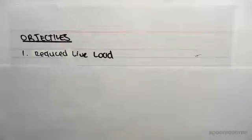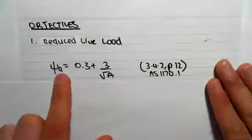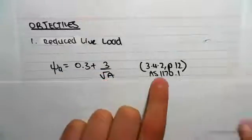Hey guys, the objective of this video is to find the reduced live load with the live load reduction factor. The live load reduction factor is given by this formula: ψₐ = 0.3 + 3/√A.